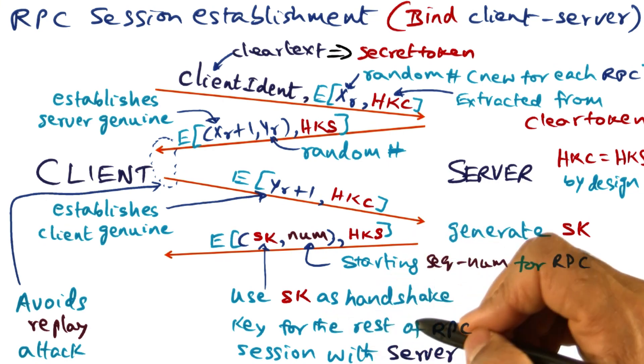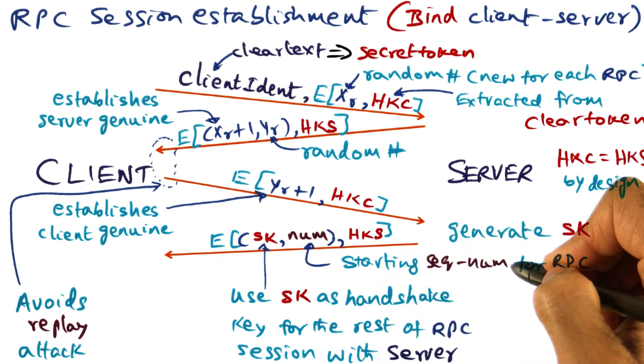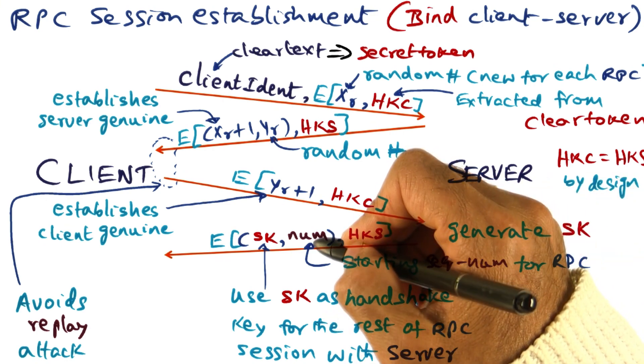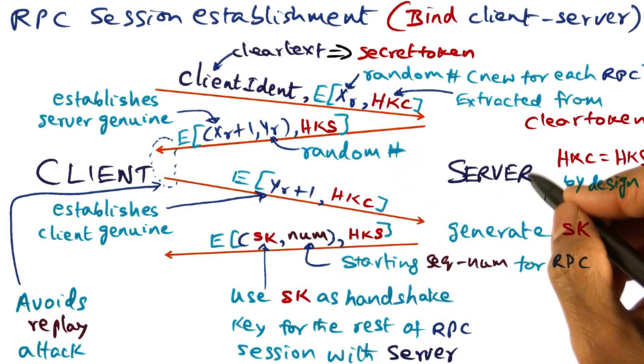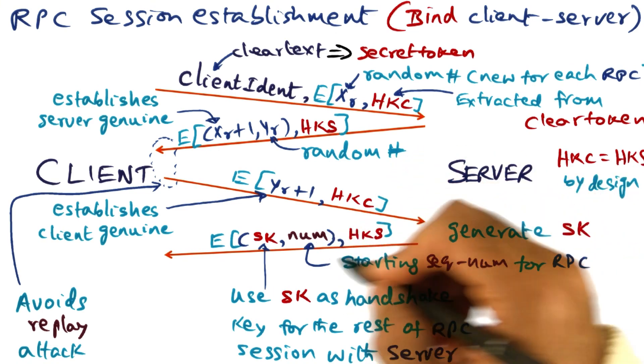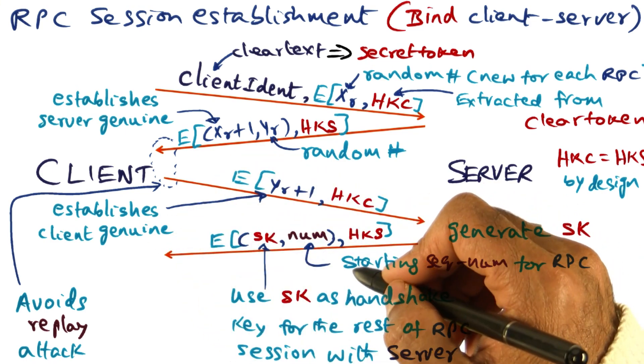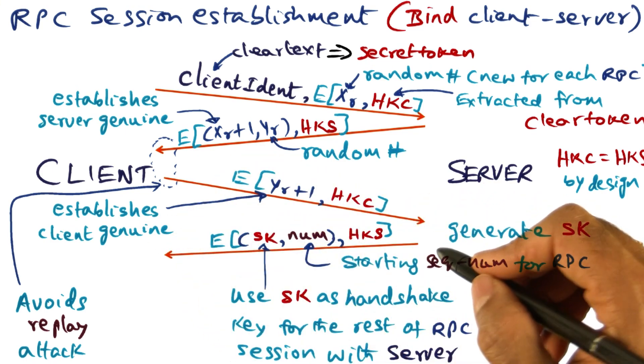And the sequence number is going to start here. There's again a safeguard against replay attacks on the server by someone masquerading as a client and generating packets with certain sequence numbers.